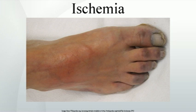Ischemia. In medicine, ischemia is a restriction in blood supply to tissues, causing a shortage of oxygen and glucose needed for cellular metabolism. Ischemia is generally caused by problems with blood vessels, with resultant damage to or dysfunction of tissue. It also means local anemia in a given part of a body, sometimes resulting from congestion.